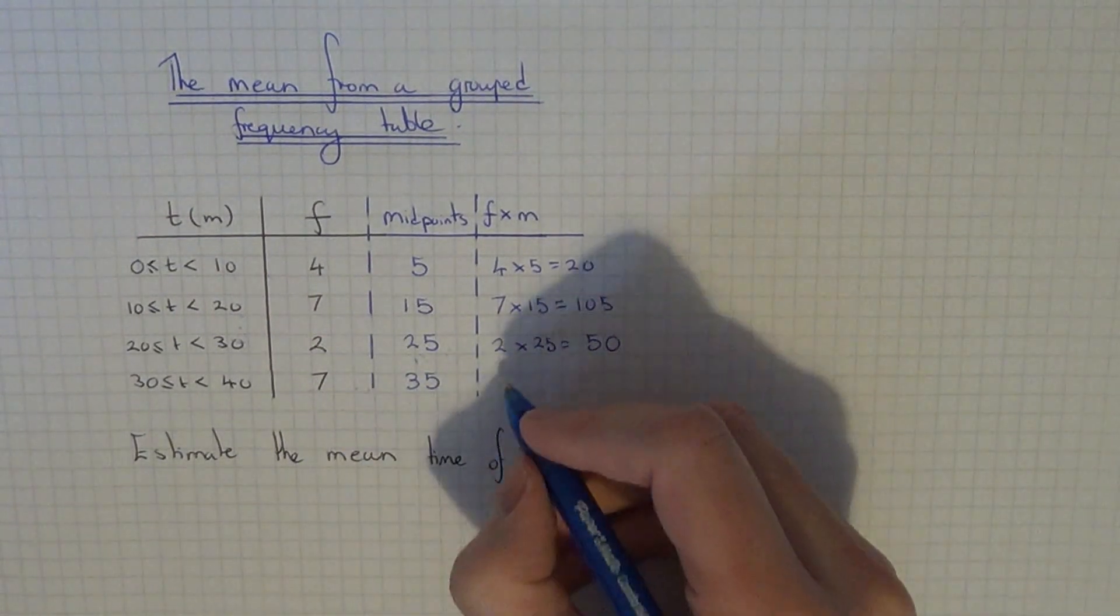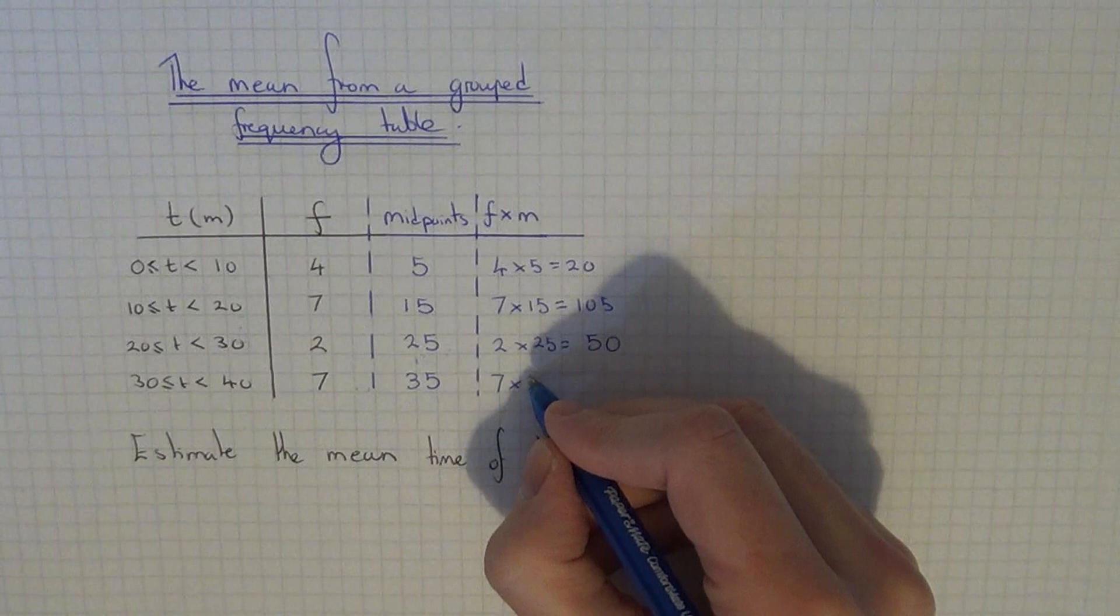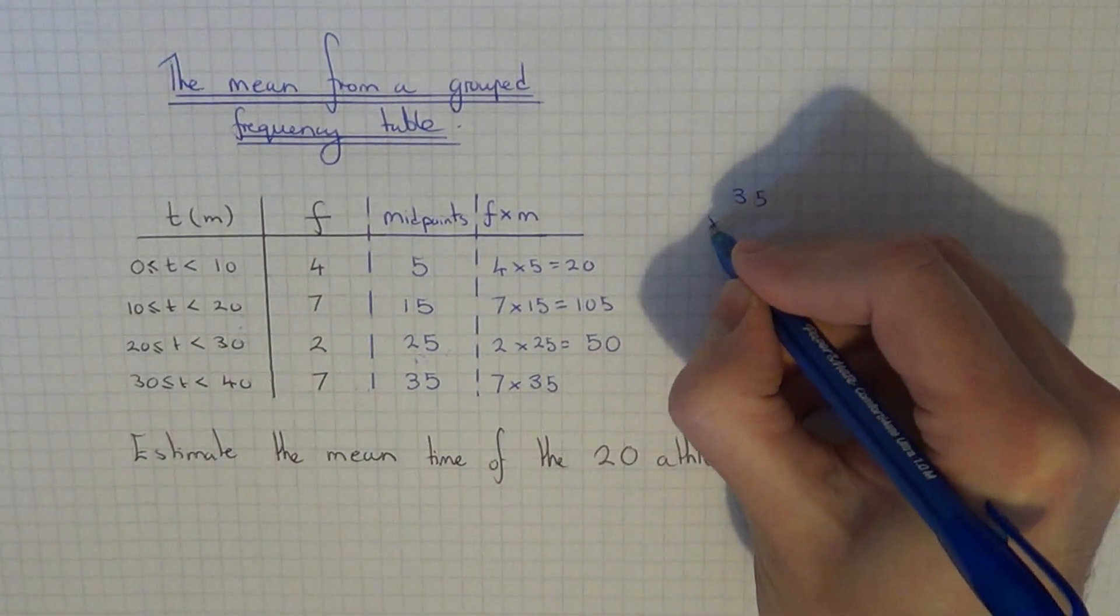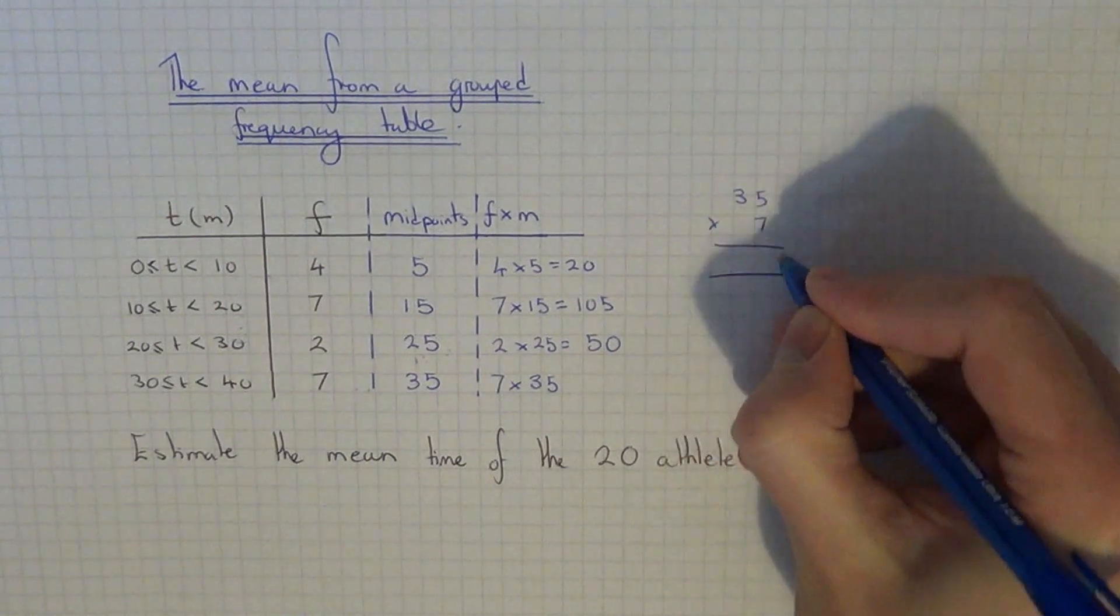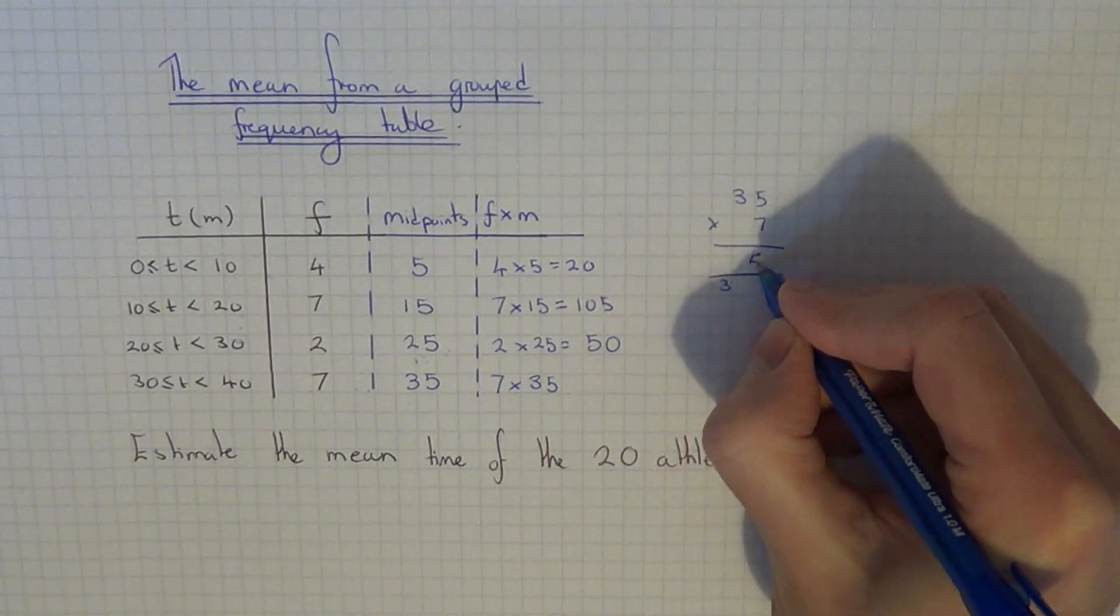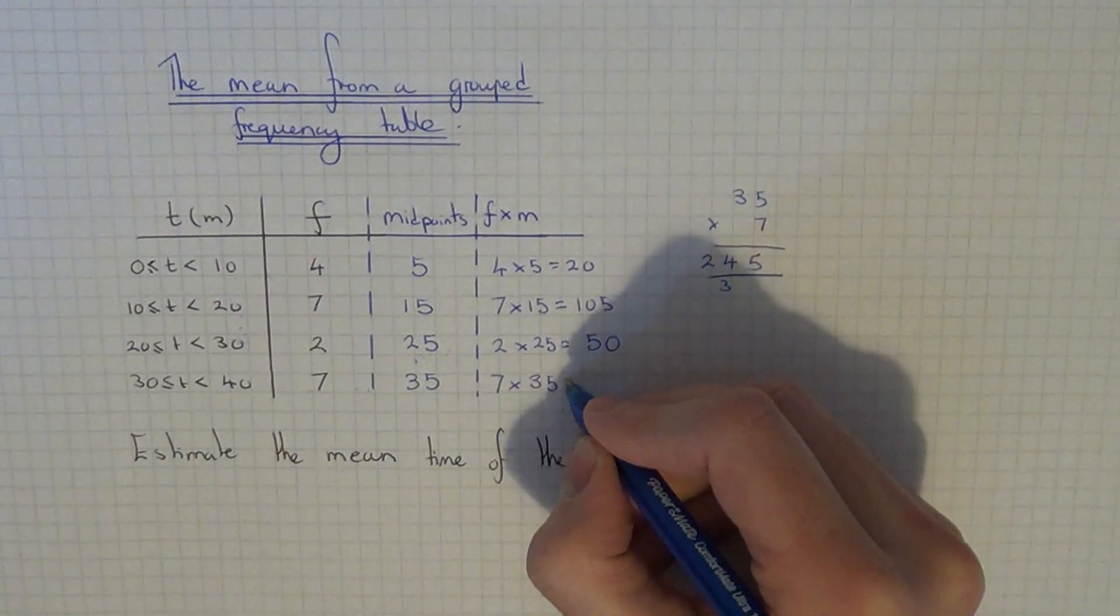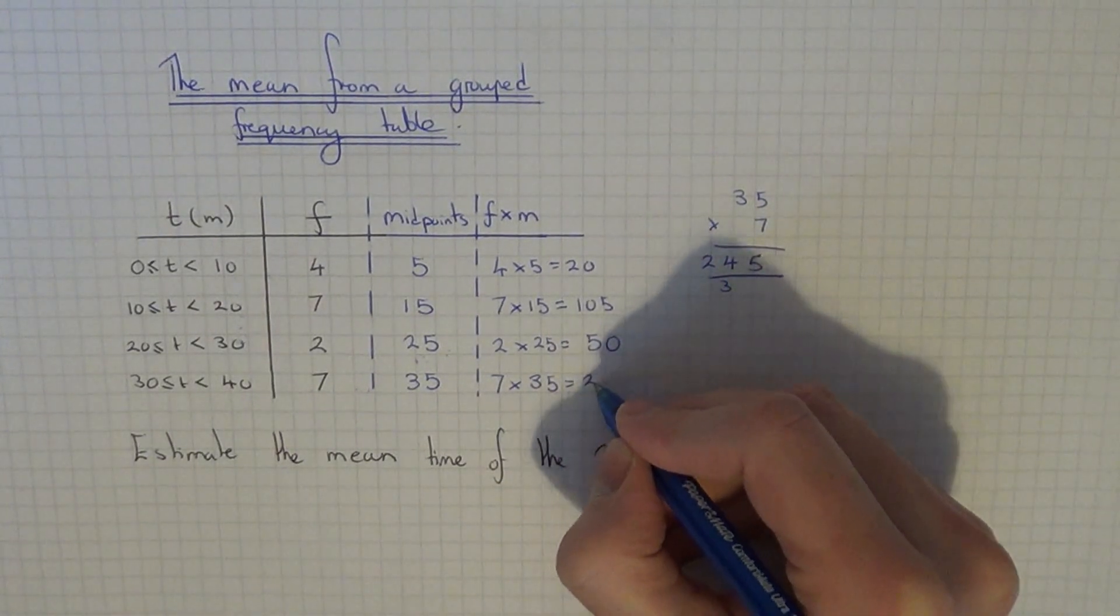And then finally you've got 7 times 35. So 35 times 7: 5 times 7 is 35, 3 times 7 is 21, plus the 3 is 24, so that's 245.